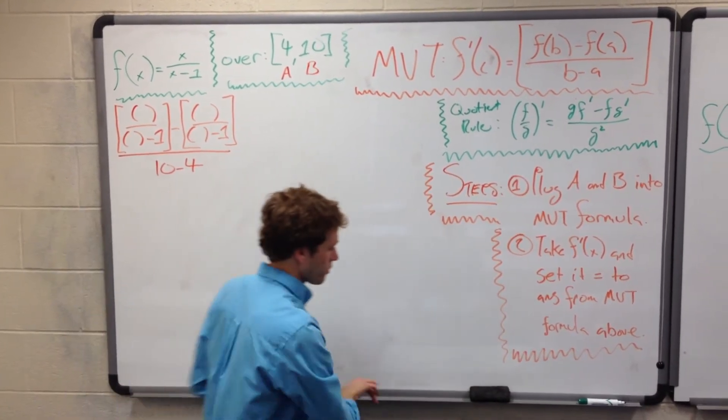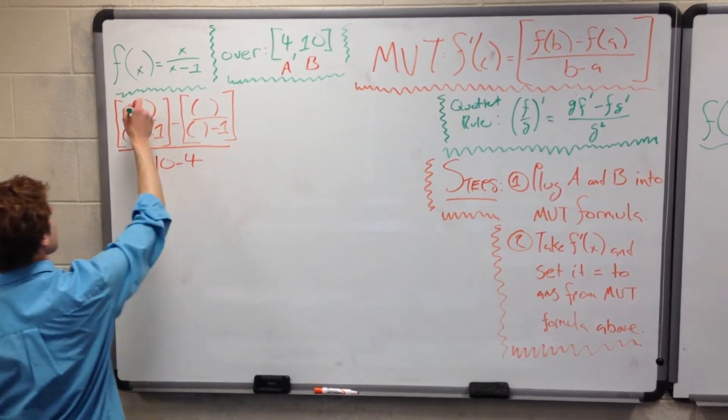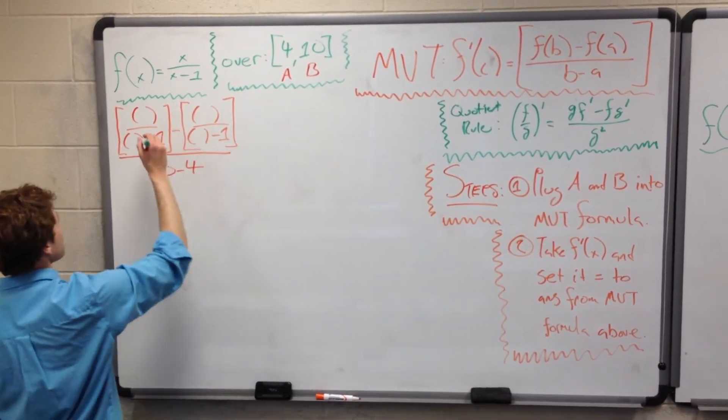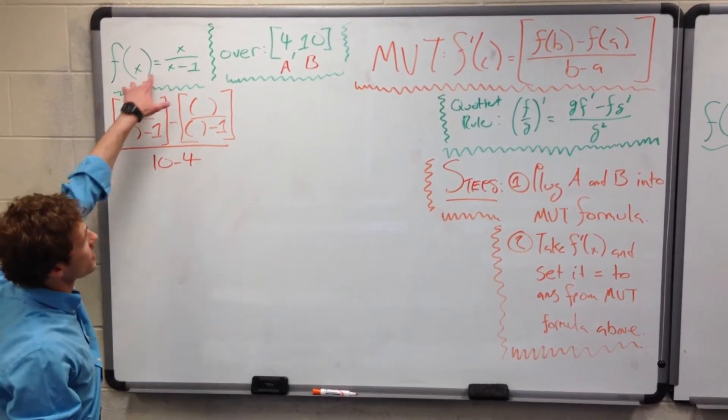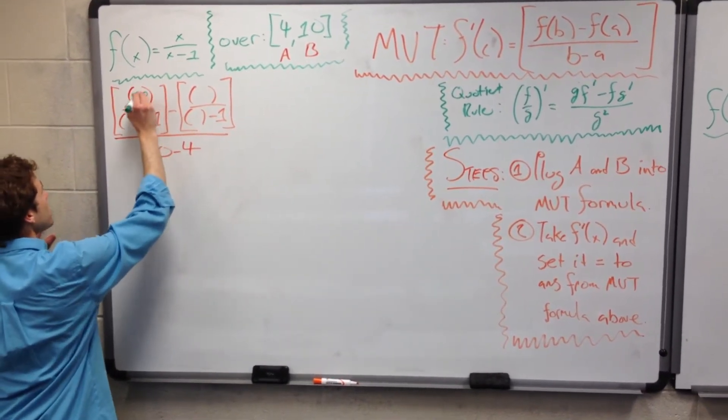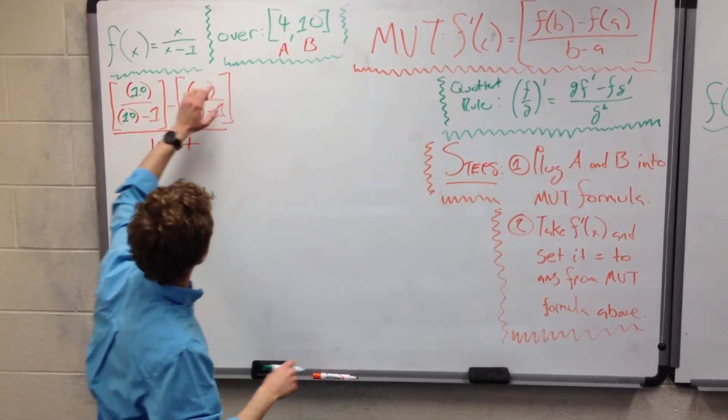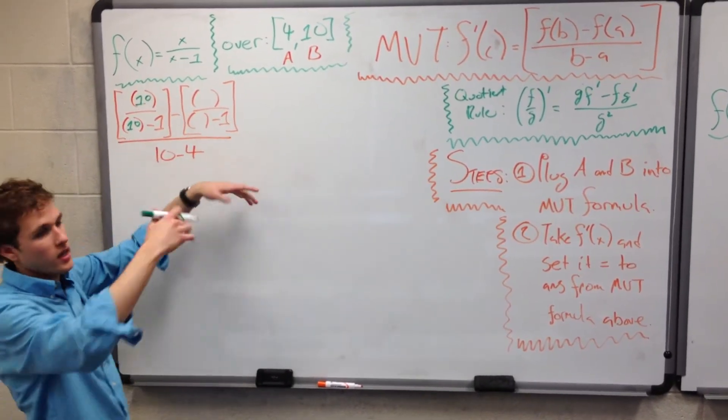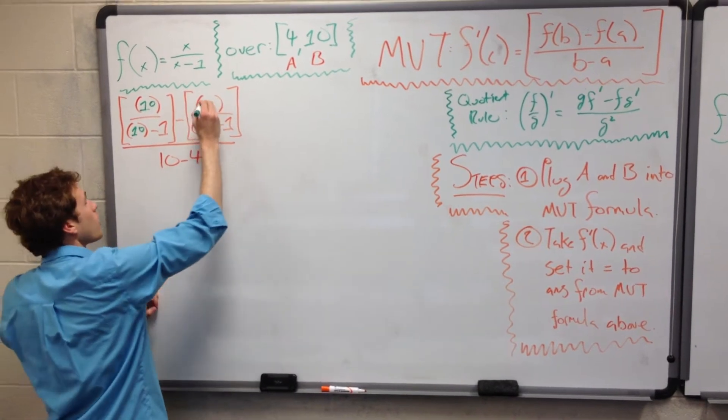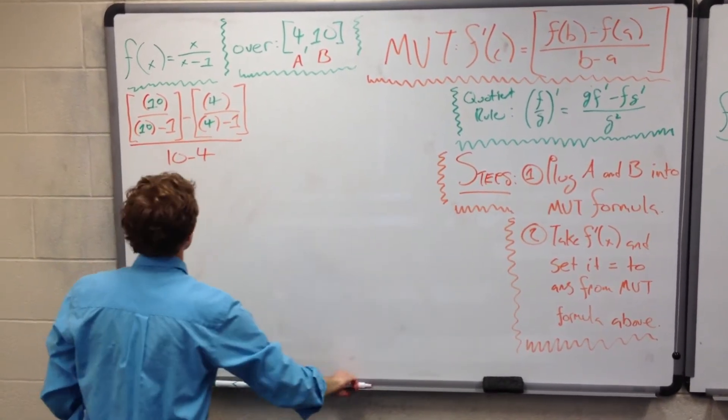So we have x over x minus 1, x over x minus 1. f of b, so this is our f of b right here. Our b is 10, so everywhere you see an x, we're going to put in 10. So 10 over 10 minus 1, and then minus f of a, so everywhere you see an x, you put in an a, which a is 4, so we put in 4, 4 over 4 minus 1.